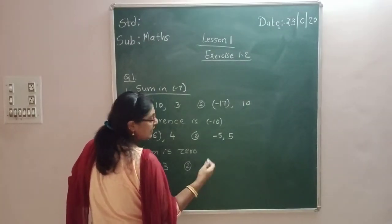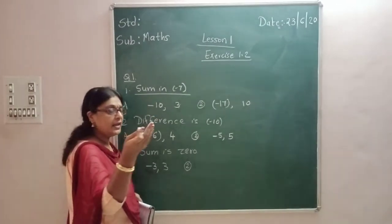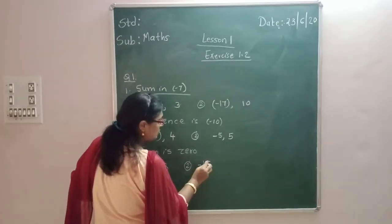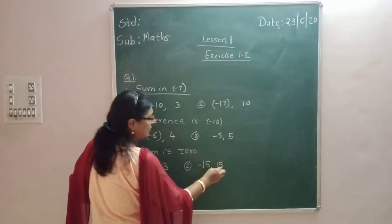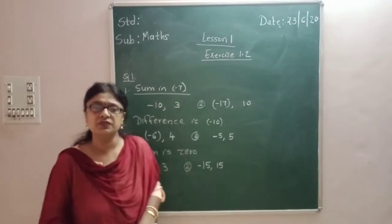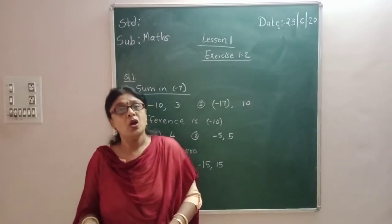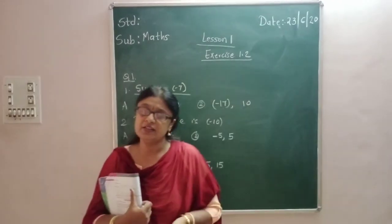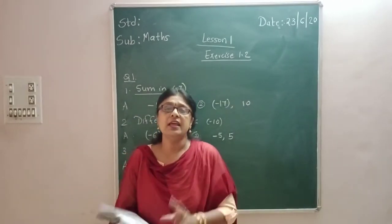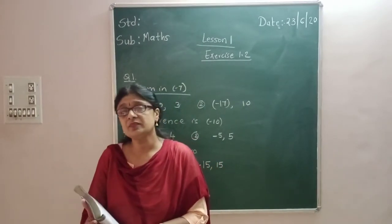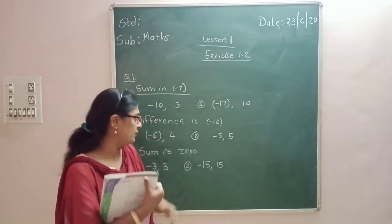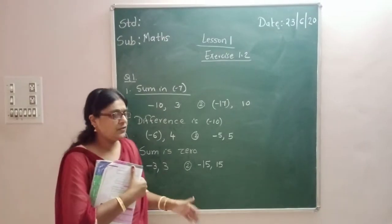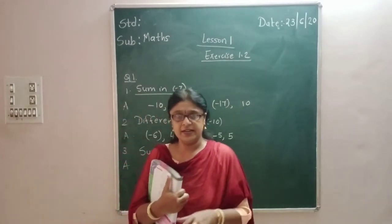Second example — anybody? I can write minus 15 and 15, so minus 15 plus 15 is equal to 0. So when you have to select two integers whose sum is 0, you have to take the additive inverse of the numbers: minus 3 and 3, minus 15 and 15, minus 10 and 10.